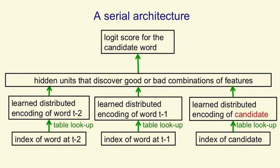One way to avoid having 100,000 different output units is to use a serial architecture. We put in the context words as before, but now we also put in a candidate for the next word in the same way as the context words. Then we go forwards through the net, and what we output is a score for how good that candidate word is in that context.